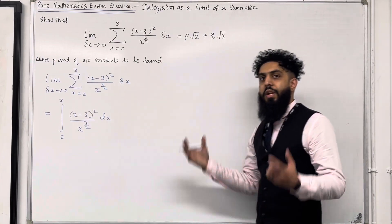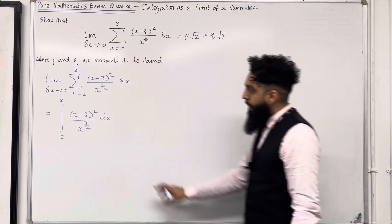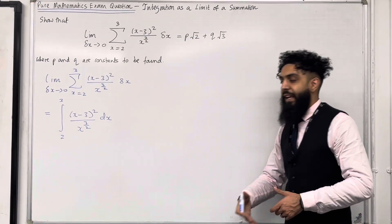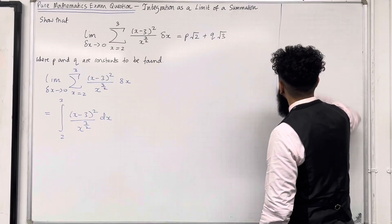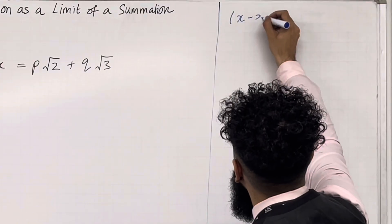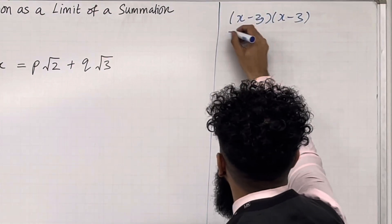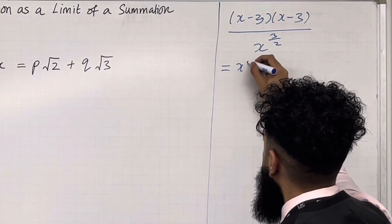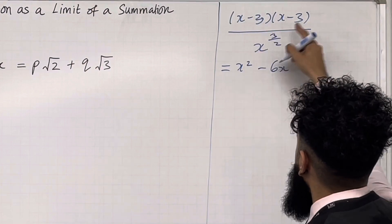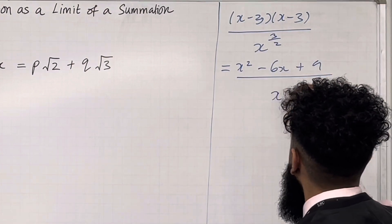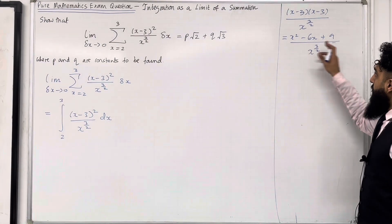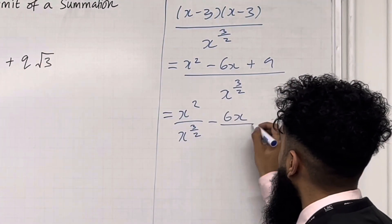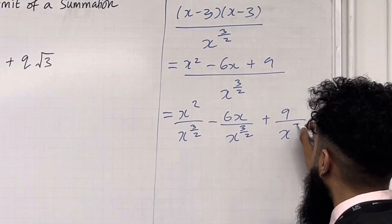Now we're going to be integrating this fraction. That cannot be integrated as of yet — we need to simplify the fraction. So I'm going to open the bracket into two brackets, expand and simplify, and then divide each term by x to the power 3/2 to get an expression that can be integrated. Expanding: (x minus 3)(x minus 3) over x to the power 3/2 gives x squared minus 6x plus 9, all over x to the power 3/2.